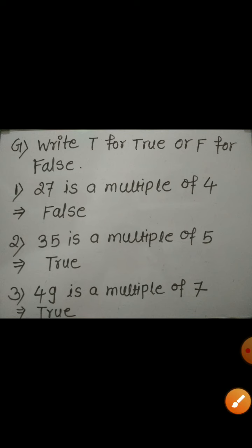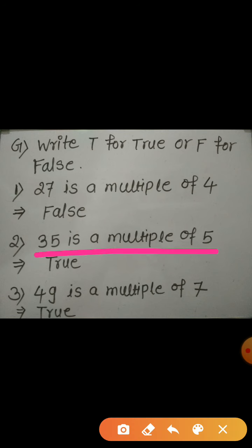The second, 35 is a multiple of 5. It's true. 5 into 7, 35. It means 35 is a multiple of 5. It's true.